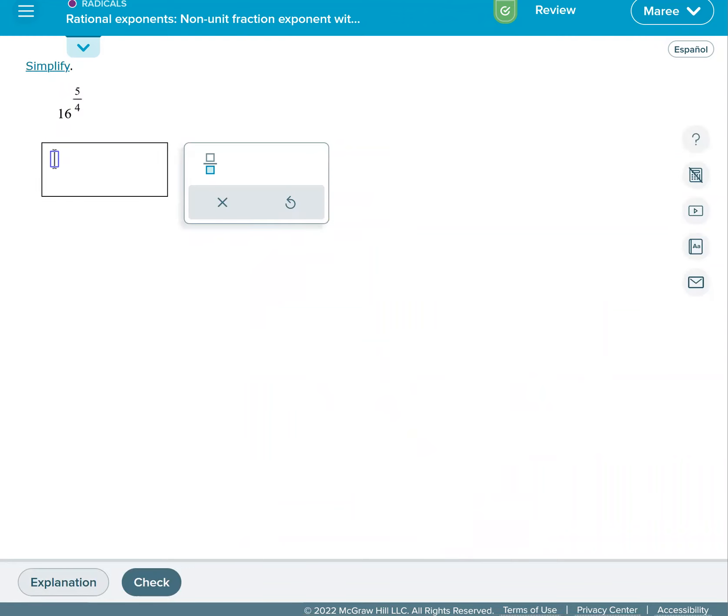So now we have the fourth root of 16 to the fifth power. We take groups of 4 because our index is 4. So we have 16 to the fourth power times 16 times 16. That's the same thing as 16 to the fifth.